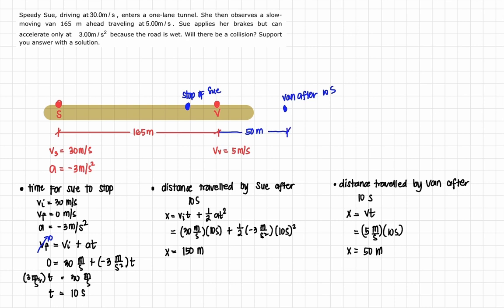This is 150 meters. So meaning there is a gap of 65 meters between Sue and the van after 10 seconds, when the time when Sue was able to stop after hitting the brake.